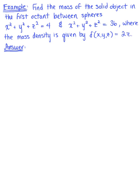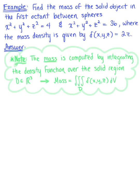Find the mass of the solid object in the first octant between the spheres x² + y² + z² = 4 and x² + y² + z² = 36, where the mass density is given by δ(x,y,z) = 2z. The mass is computed by integrating this density function over the solid region D in ℝ³.